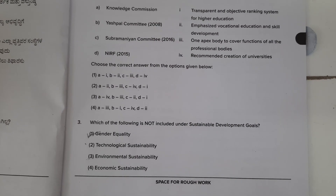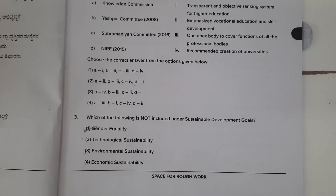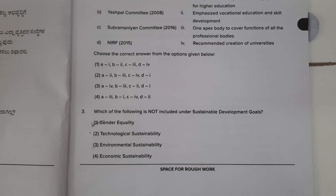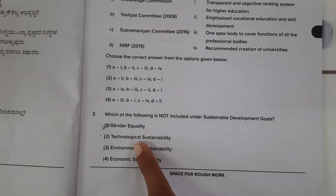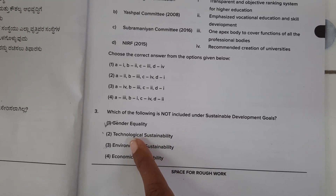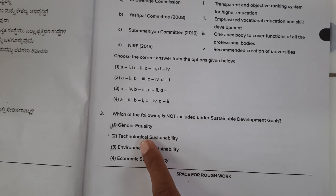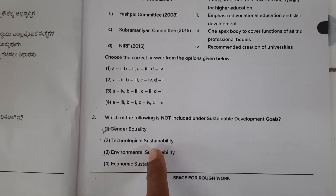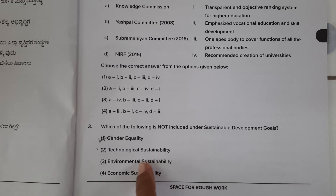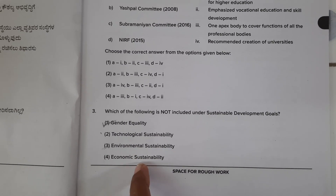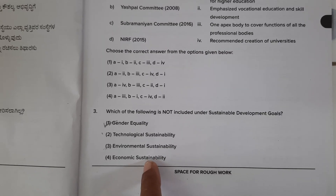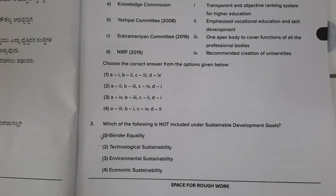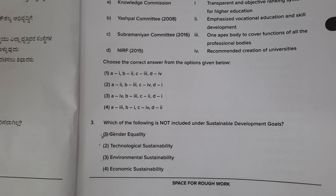The next question: which of the following is not included under Sustainable Development Goals? Among these options — gender inequality, technological sustainability, environmental sustainability, economic sustainability — answer 1, gender inequality, is not included under Sustainable Development Goals.